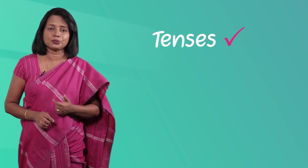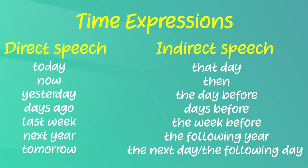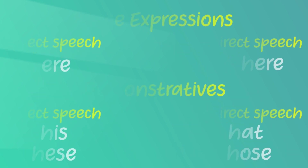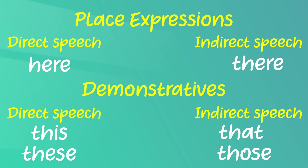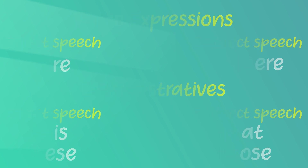Now you know how tenses change in reported speech and also how pronouns change. I want to explain some more things that change in reported speech. Certain time expressions such as 'today,' 'tomorrow,' or 'yesterday,' and certain place expressions like 'here' and 'there,' also change in reported speech. Look at this table — all these changes are here. See how the time expressions, place expressions, and also the demonstratives change.